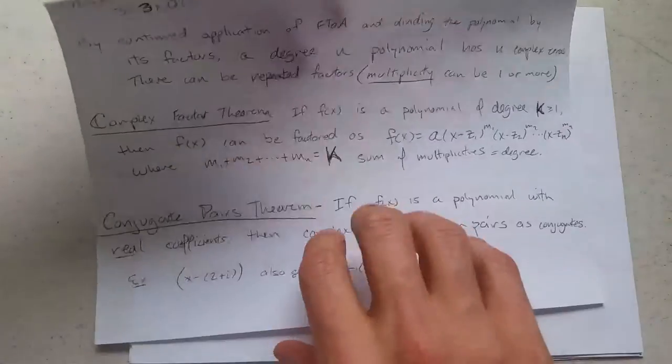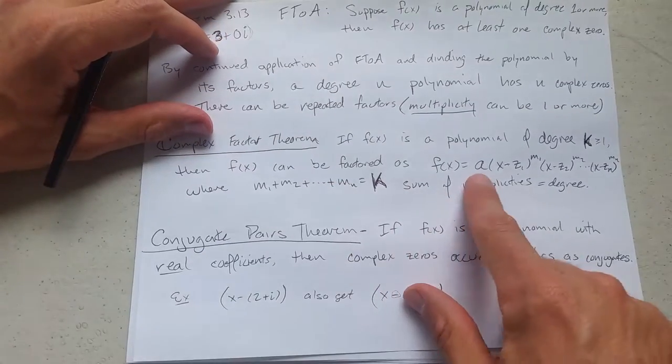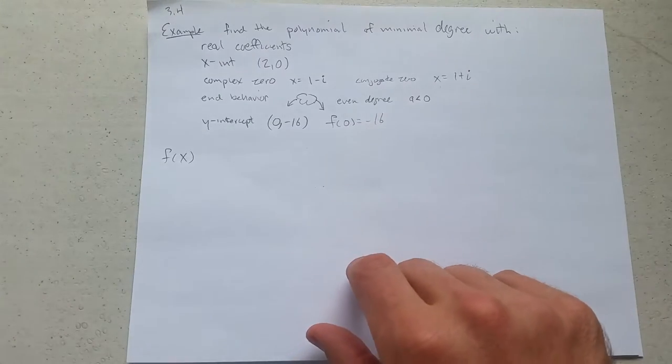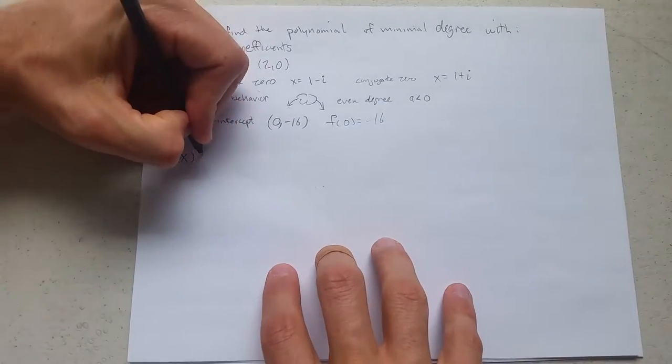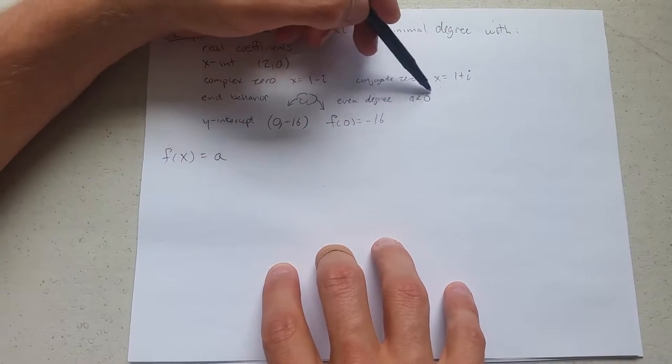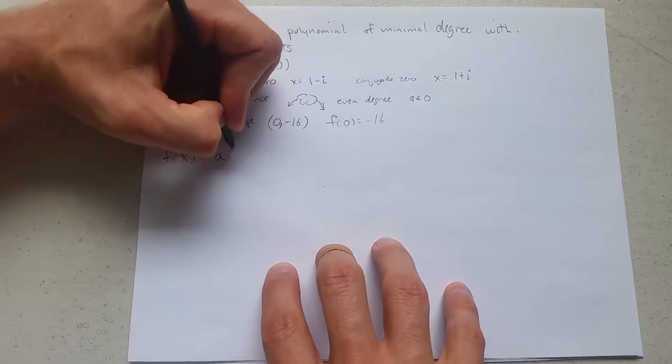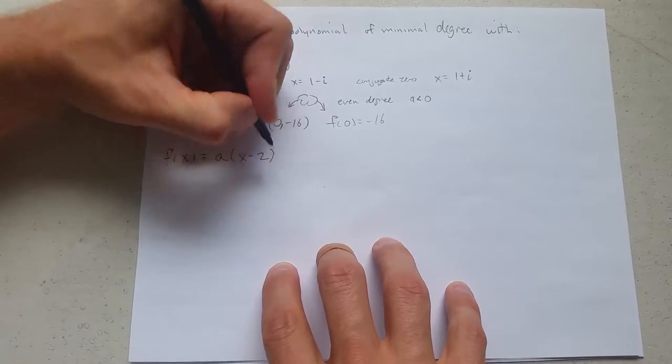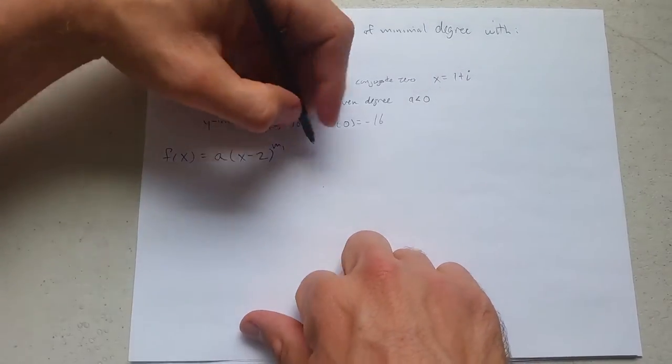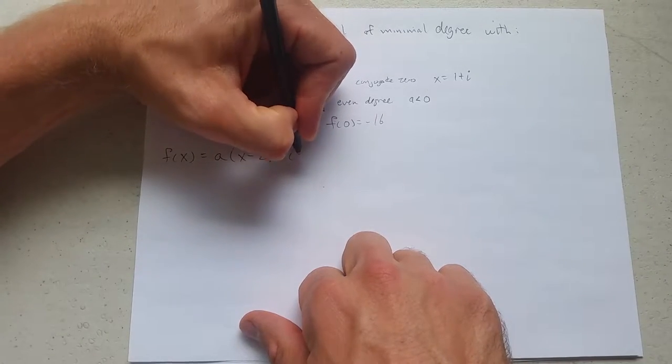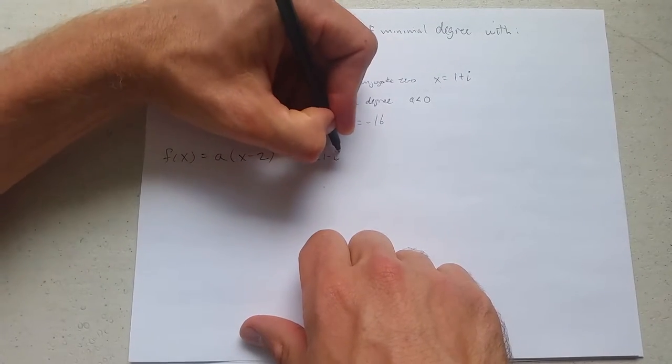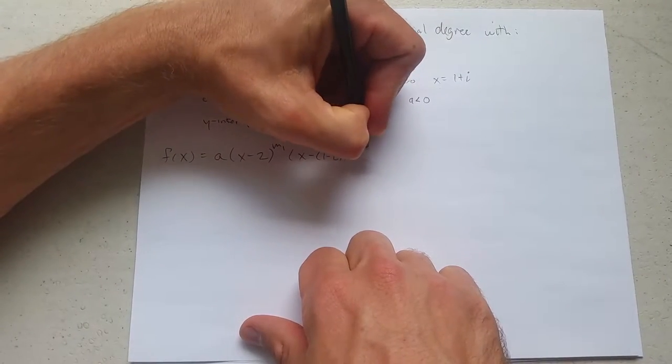So just flipping back real quick to the complex factor theorem, I'm going to write the polynomial out in this form. The only thing is I don't know the multiplicities, so there could be a coefficient in the front. In fact, there has to be, because it needs to be negative. I'll put the real zero first. Now I don't know the multiplicity, so I'm just going to call that m1. We'll figure out what that is. x minus—what's our next zero? Complex zero. 1 minus i to the m2.